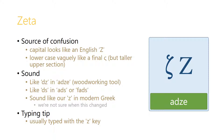The first of these is Zeta. The source of confusion here is that the capital Zeta looks like an English Z, but the lowercase looks vaguely like a final S, although it's taller in the upper section. The sound is like DZ in 'adze,' the woodworking tool, or like the DS in the English words 'adz' or 'fadz.' It sounds just like our Zed in modern Greek, and we're not sure when this changed. A typing tip: this is usually typed with the Zed key, because Zed is closest to the sound in English. But remember that even at the beginning of a word, sort of like the letter Psi, this sounds like a combination of the letters D and Zed.